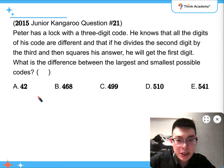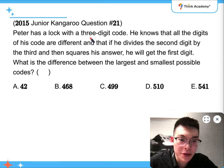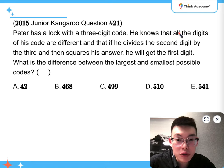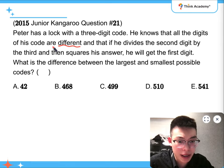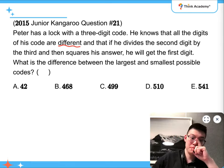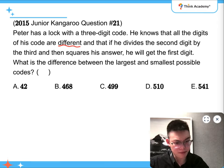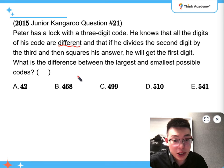So, question number 21. Peter has a lock with a three-digit code. He knows that all the digits of his code are different, and that if he divides the second digit by the third and squares his answer, he will get the first digit. What's the difference between the largest and smallest possible codes?